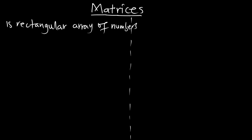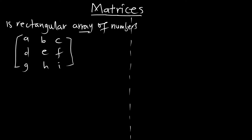A rectangular array of numbers can be seen in this form: say a, b, c, d, e, f, g, h, and i. This is a rectangular array of numbers — these alphabets are just representing the various numbers and their positions. We can denote a matrix by a capital letter, say A. So this is matrix A and the members of the matrix are as shown: a, b, c, d, e, f, g, h, and i.